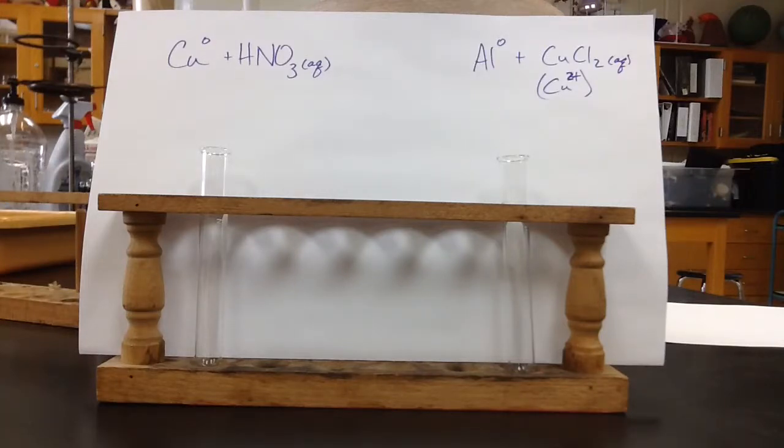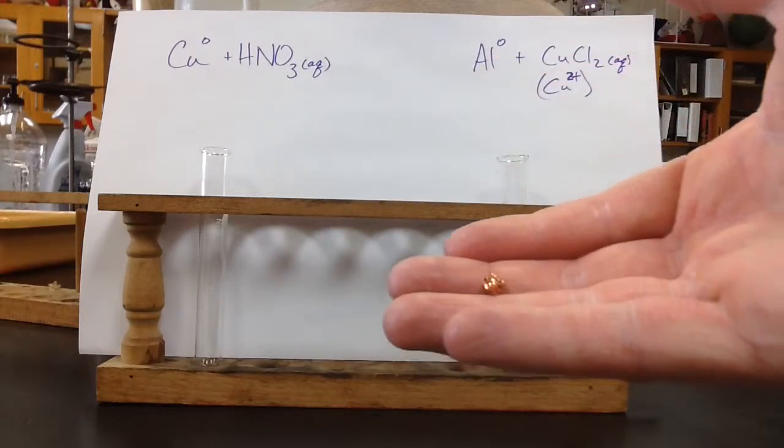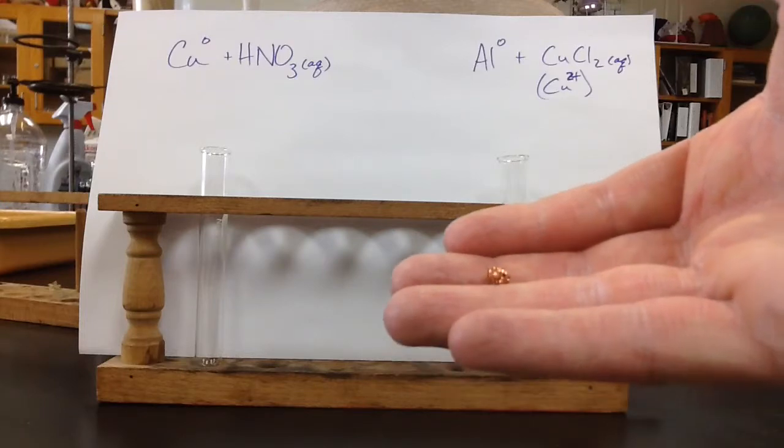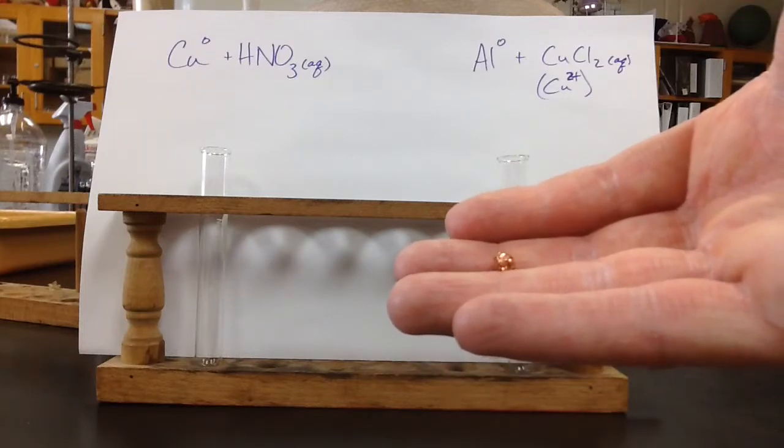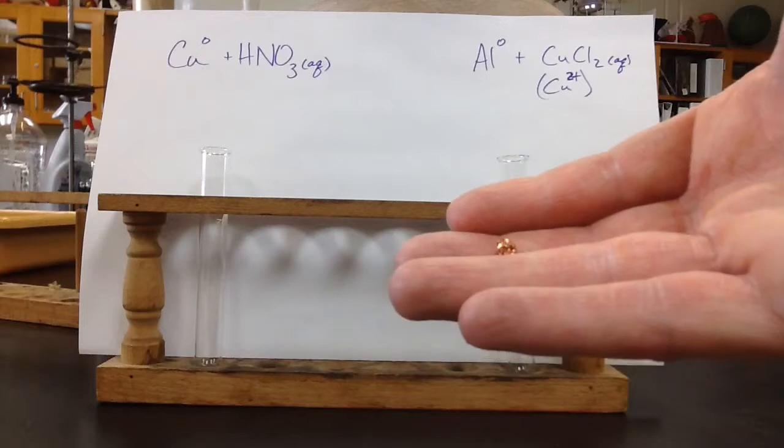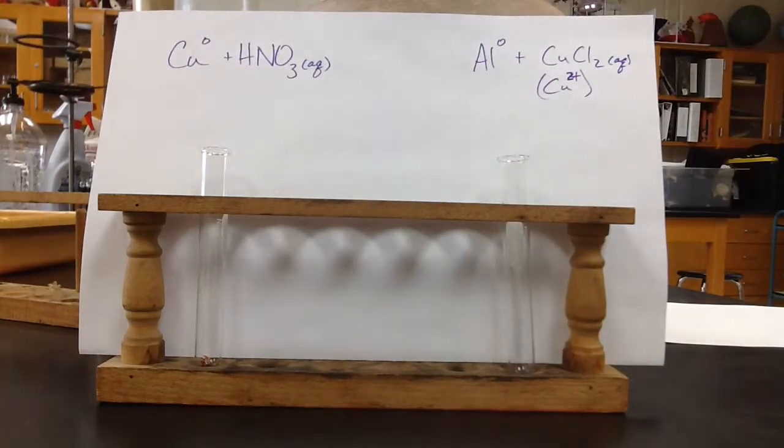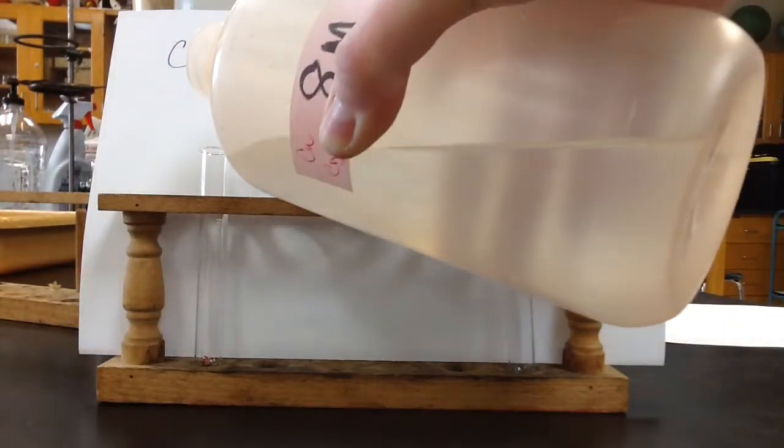So let's start out with the nitric and the copper. You can see on the screen there, we got some copper here, and it's actually a little bit of copper turnings or copper foil that we kind of balled up there. So we're going to go ahead and drop that in our test tube. And then we're going to add some nitric acid. Here's my 8 molar nitric acid that we're going to add.